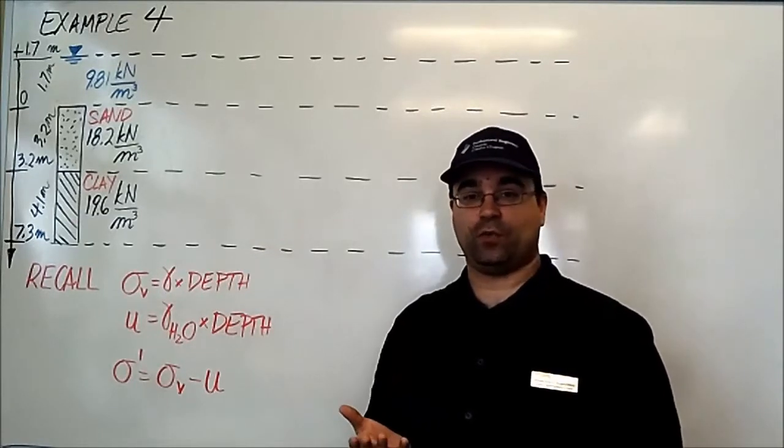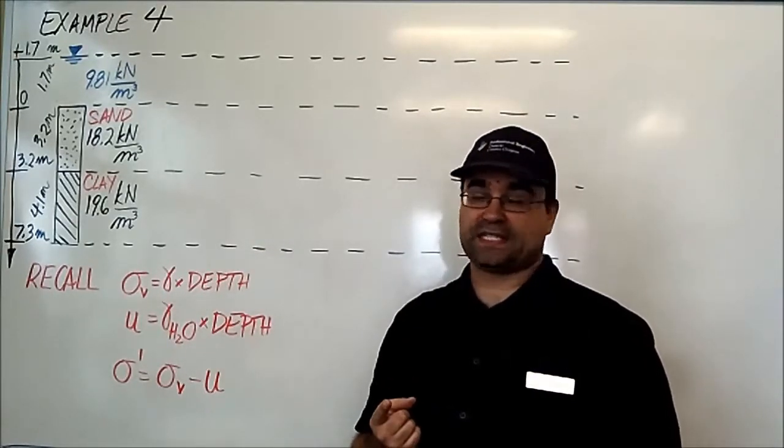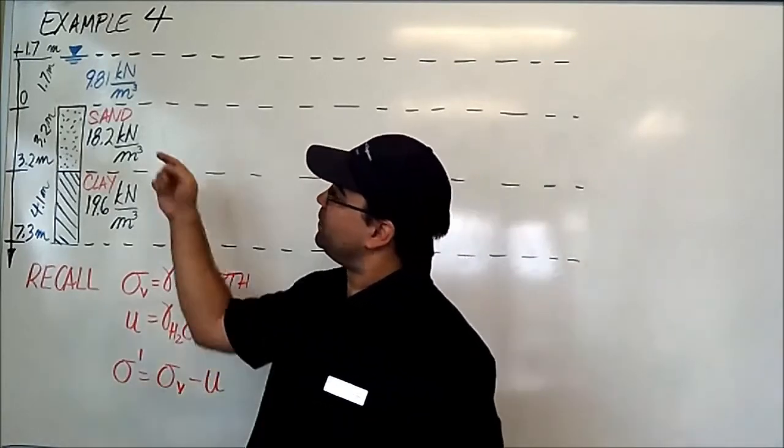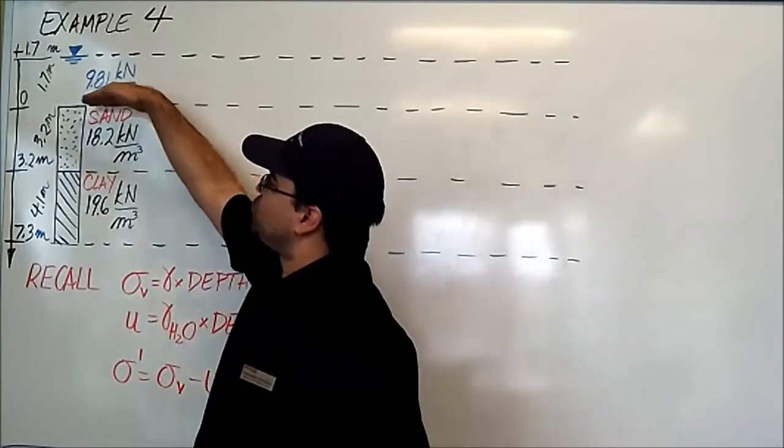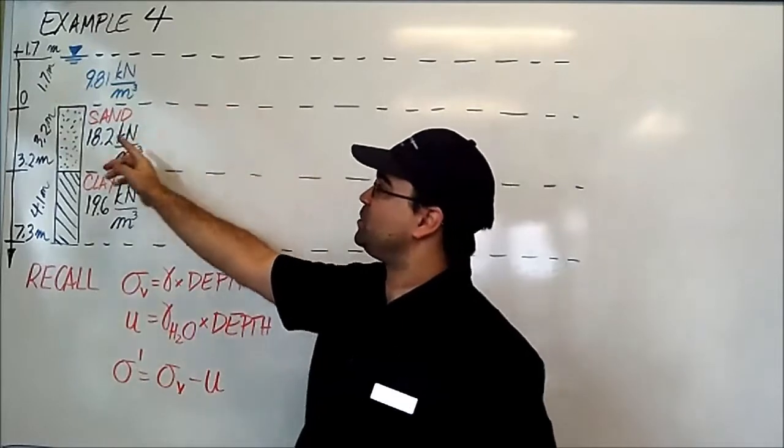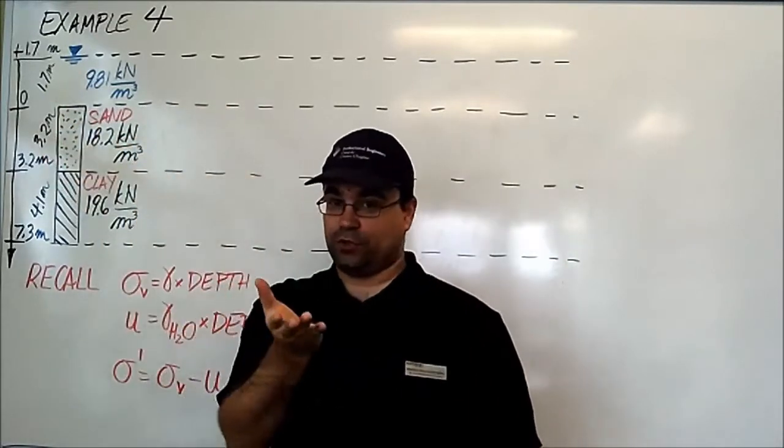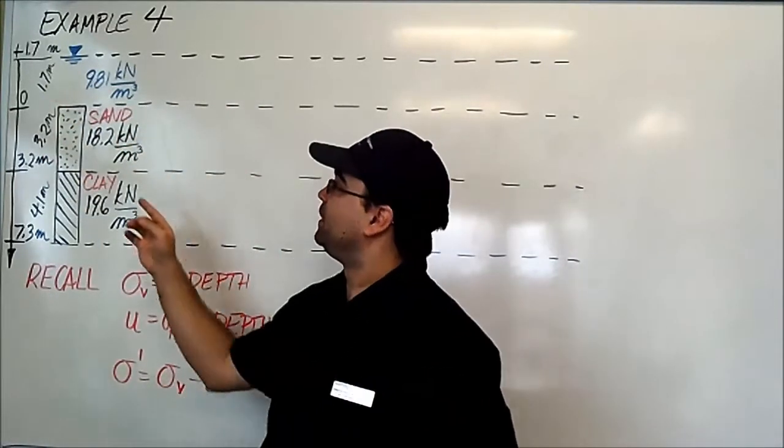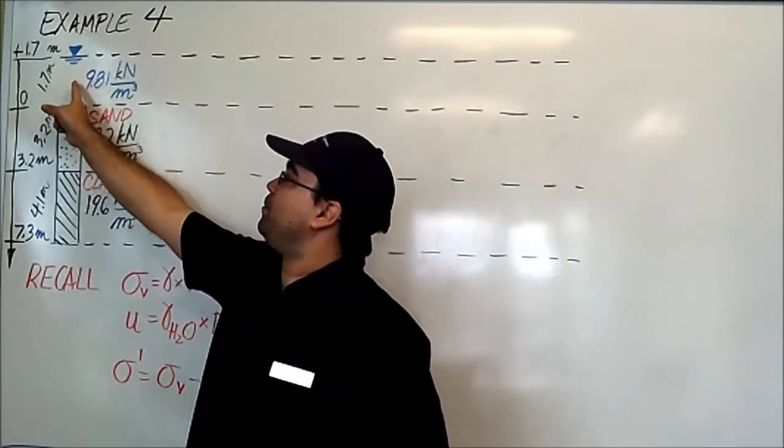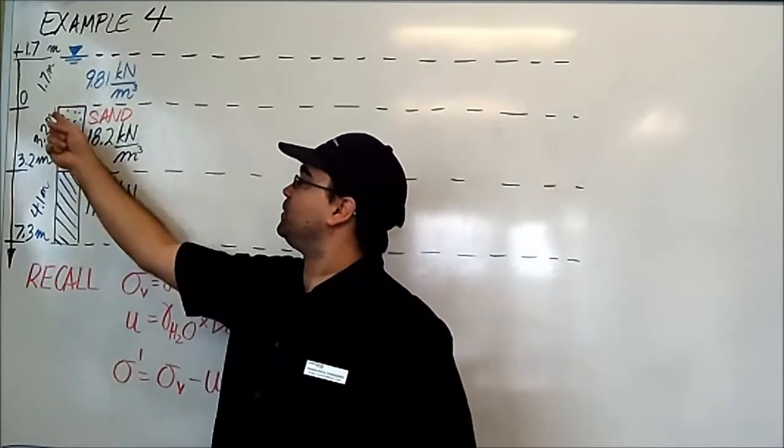So you're going to have a look at what a metric example looks like. Next, the water table is above the surface of the ground. As you can see here, and from the example in your course notes number 4, the water level is actually 1.7 meters above the ground level.